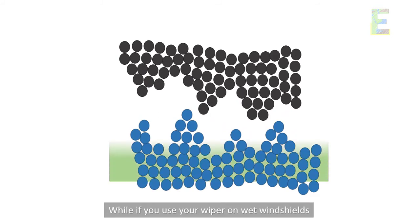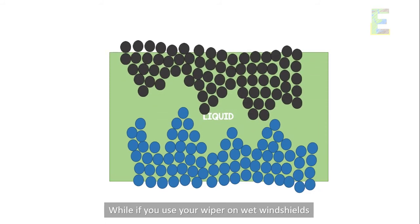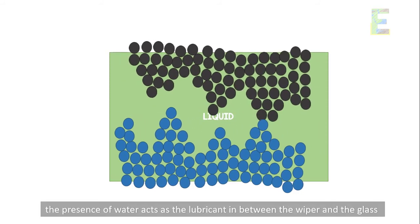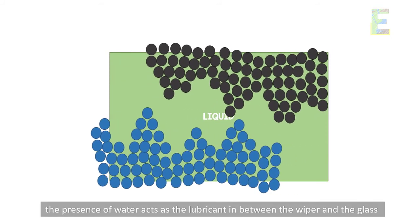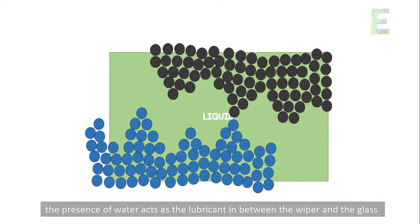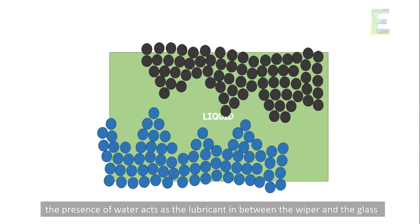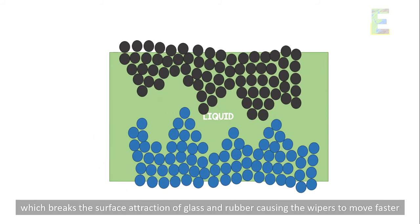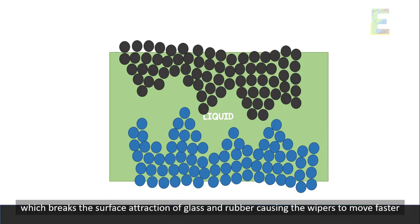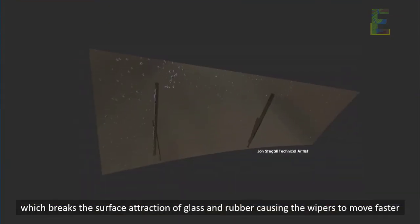While if you use your wiper on wet windshields, the presence of water acts as the lubricant in between the wiper and the glass, which breaks the surface attraction of glass and rubber, causing the wipers to move faster.